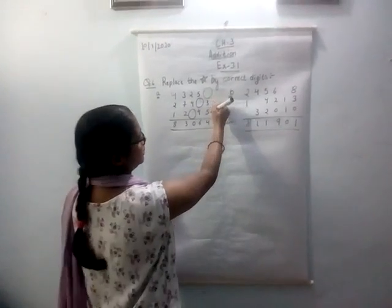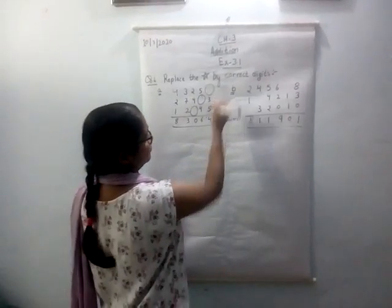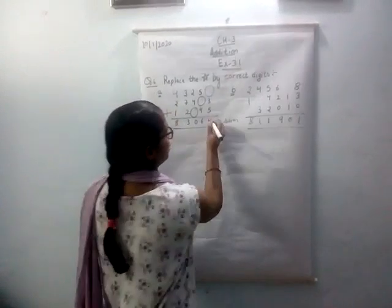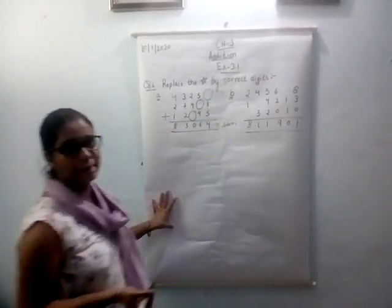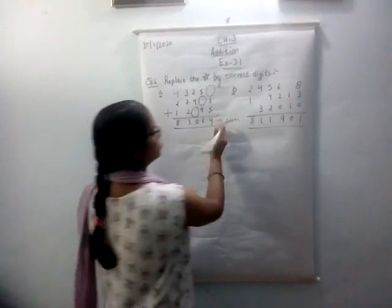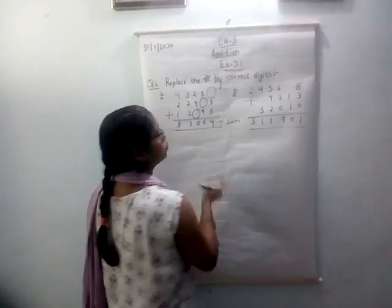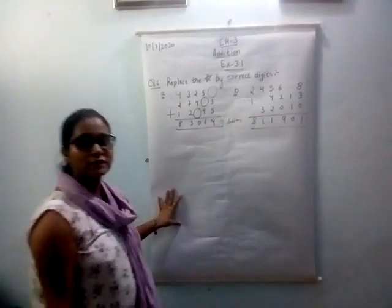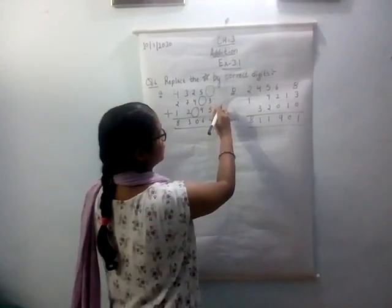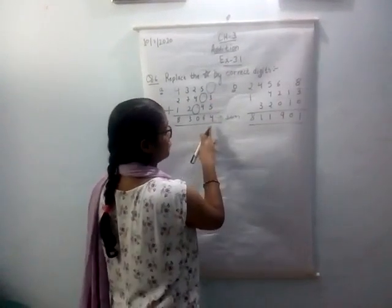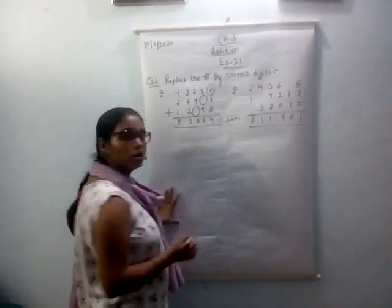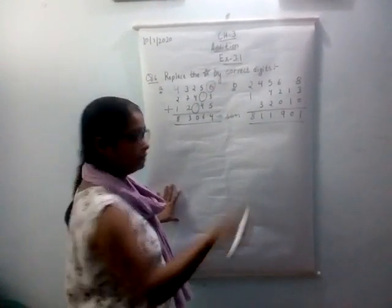Now look here: 3 plus 5 becomes 8. There is a 4 given to you in the sum, so you have to reach 4. You cannot subtract, so 3 plus 5 is 8 — you have to get 14 over there. That's why 6 goes there, because 8 plus 6 is 14.